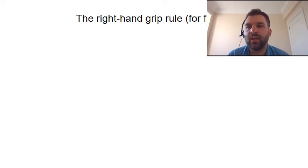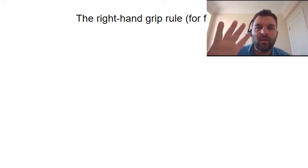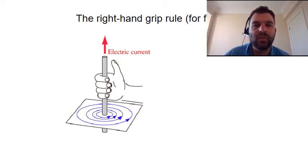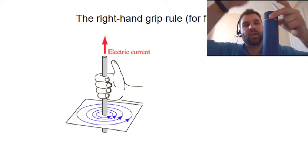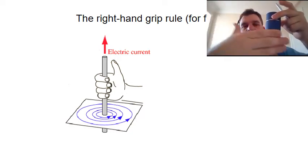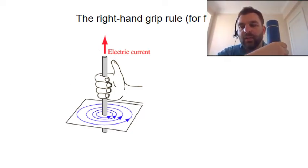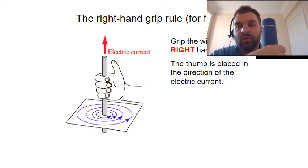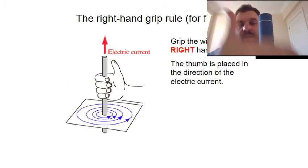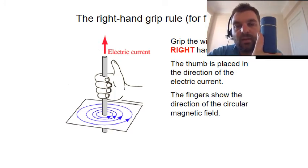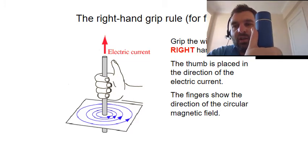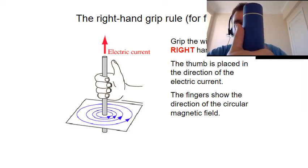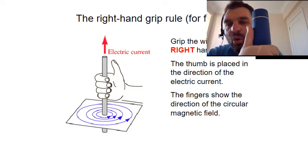This is where the right-hand grip rule comes in. Here we have our right hand, and here is going to be an example of a wire. We have a current going up, and we grip around the wire with the right hand. The thumb is placed in the direction of the electrical current, and the fingers show the direction of the circular magnetic field. So here's my fingers — that's the direction going around towards me, which is the direction of the magnetic field around the wire.